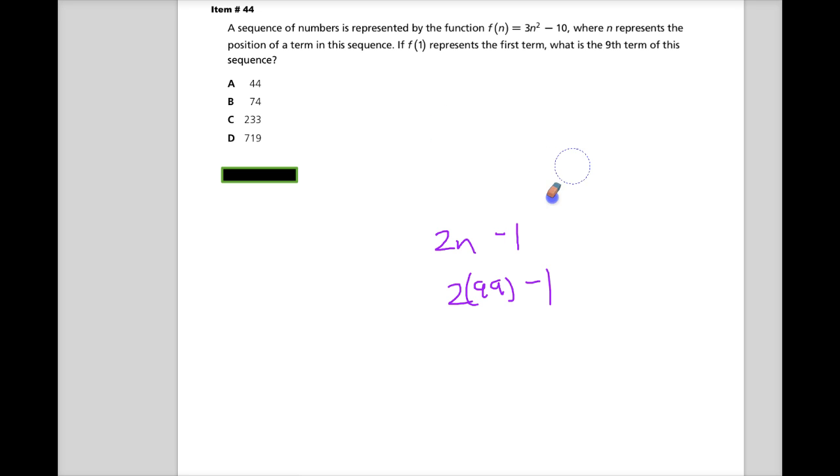n represents the position of the term in the sequence, it just means where it's located. The n value would just be where it's located in sequence: it's the first term, the second term, the third term.